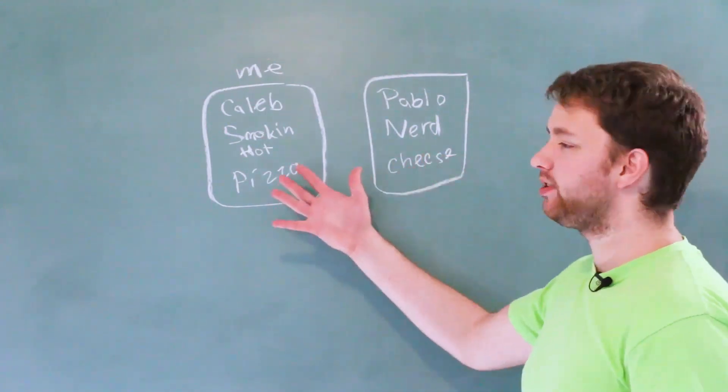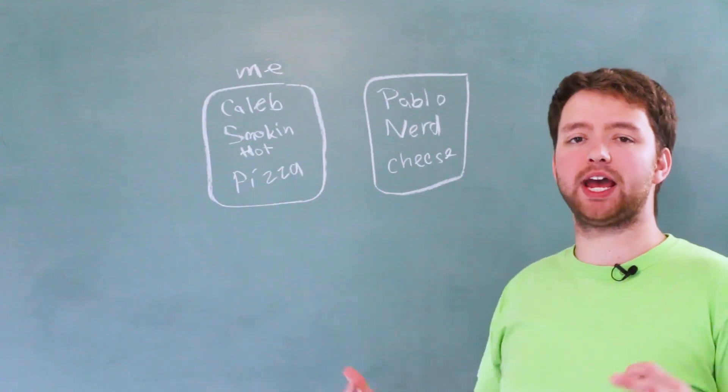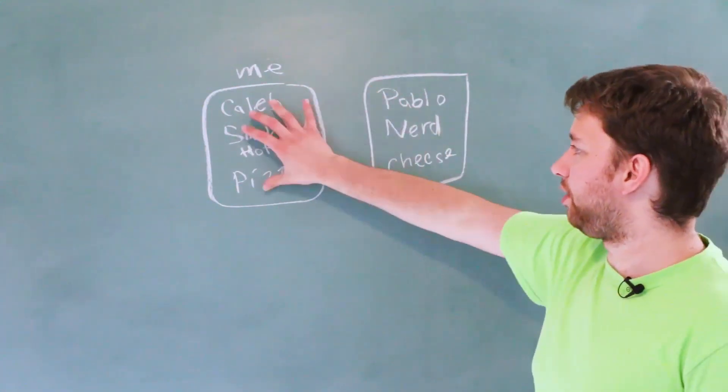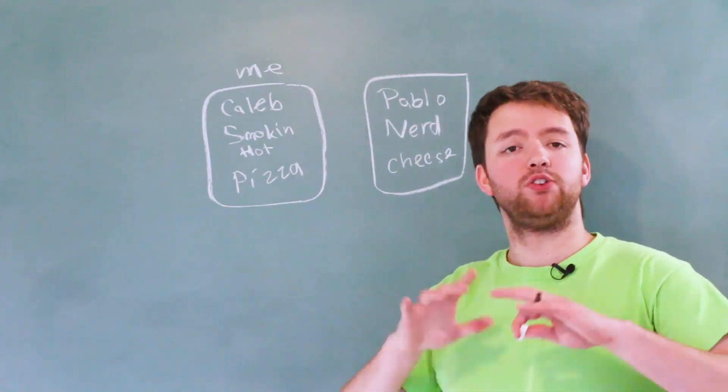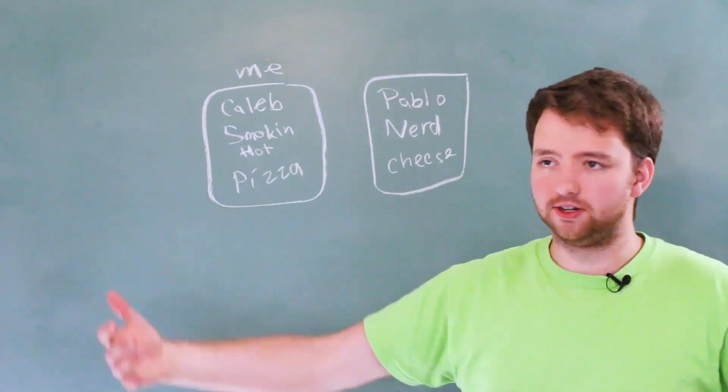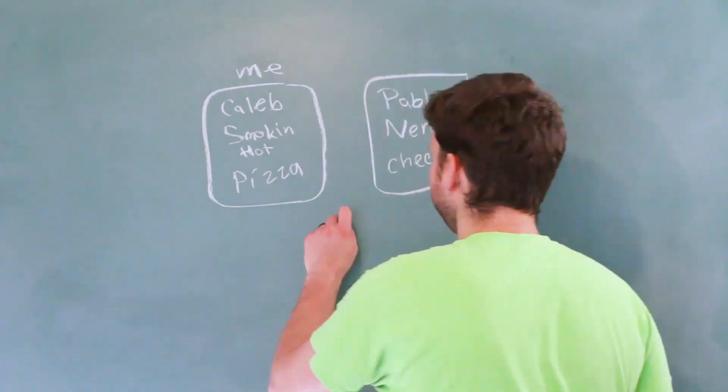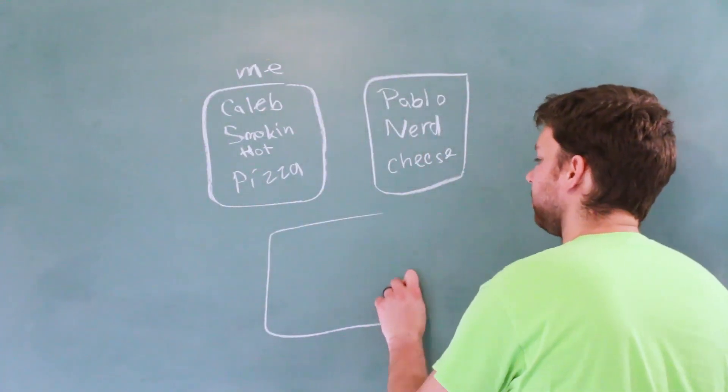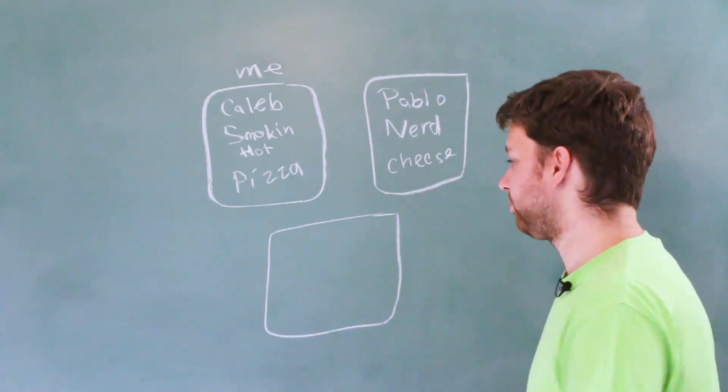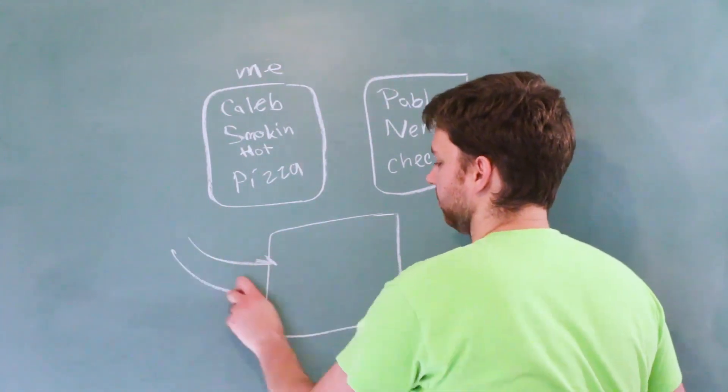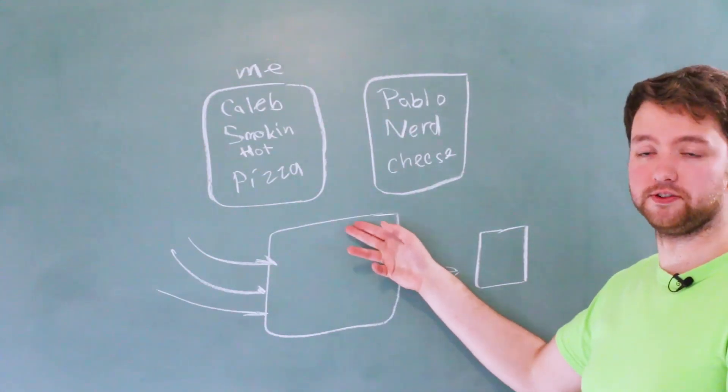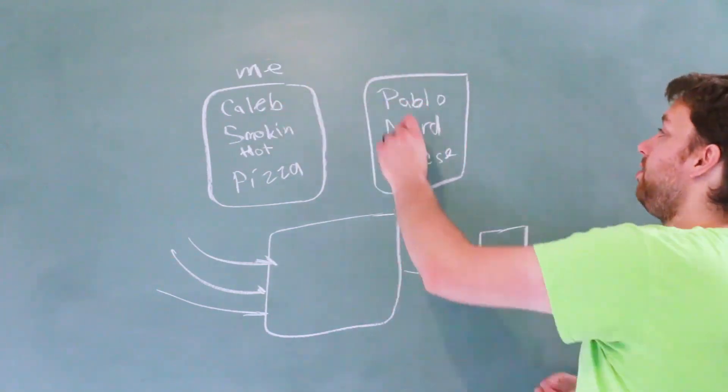And, you know, you might be doing this for everybody. Maybe you're trying to make an application that describes people, and you're going to have tons of people. Well, you don't want to have to make all these objects from scratch every time. So, instead, we use what's known as a constructor function. And consider the constructor function a thing that takes information as input and gives you a new object. So, basically, we could use this constructor function to build me and you.